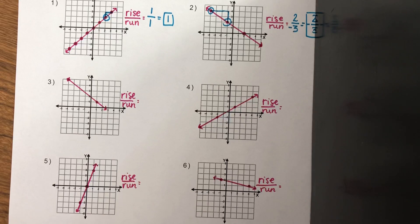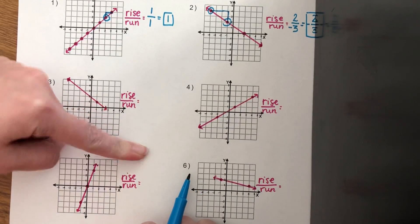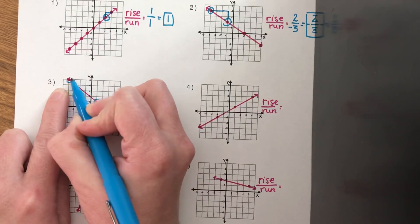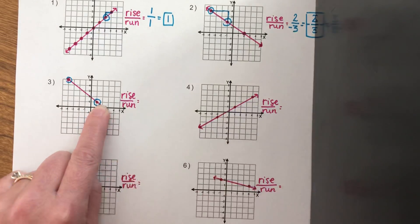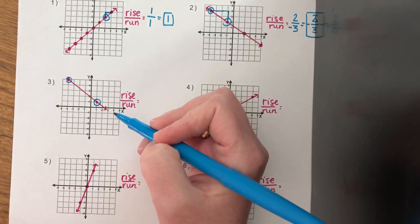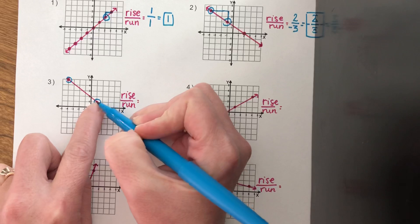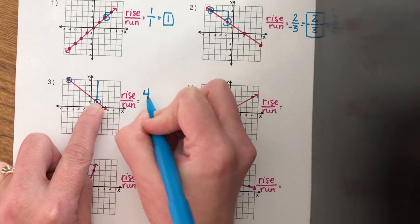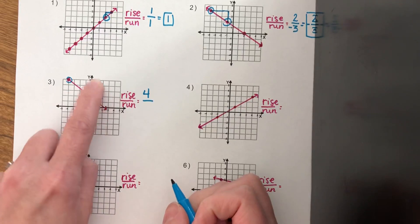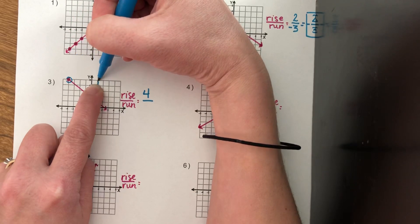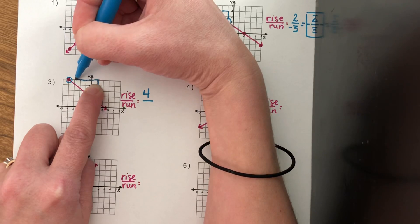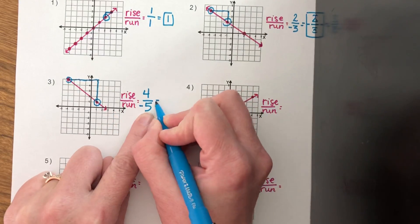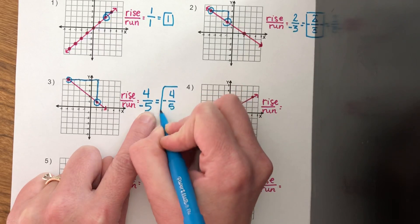Number three. Before I even figure out the slope, I can see this graph is going down, meaning it is a negative slope. I need to count between two of the closest points, and I always start at the bottom. From this point to get to that one, I go up one, two, three, four — so my rise is a positive four. To get to the next point I went left one, two, three, four, five. Left is negative, so my run is negative five, but it's the whole fraction that's negative, not just the five.